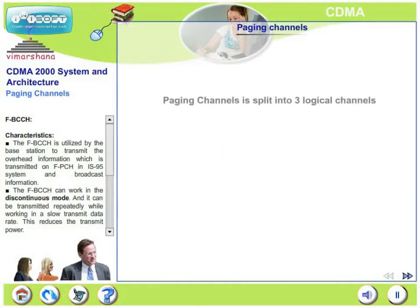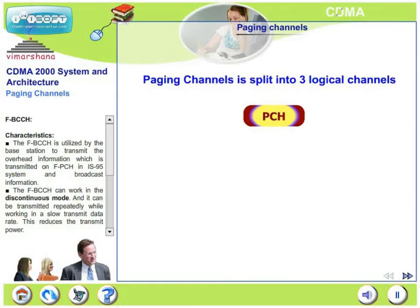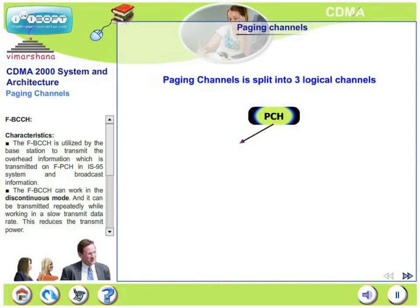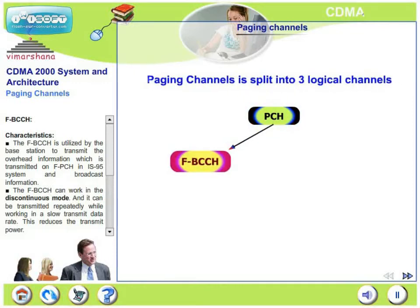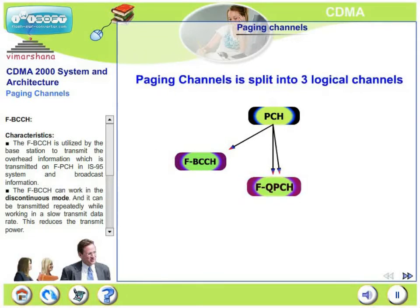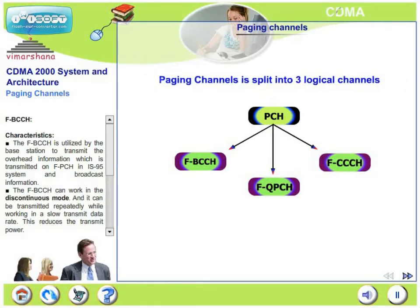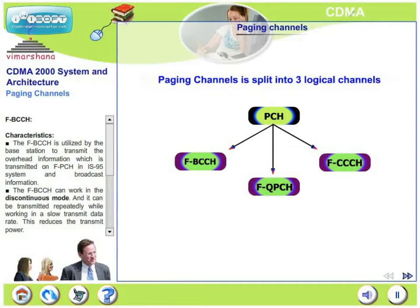The paging channel is in fact split into three logical channels: BCCH — the broadcast control channel; QPCH — the quick paging channel; and CCCH — the common control channel. We will briefly cover all these channels.